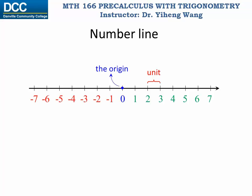While negative numbers such as negative one, negative two, negative three, etc., are represented to the left of the origin.